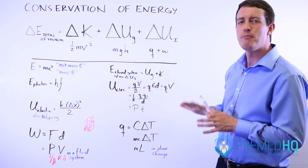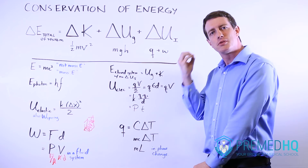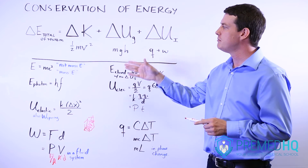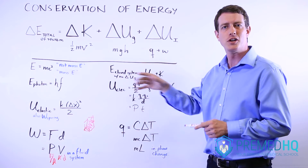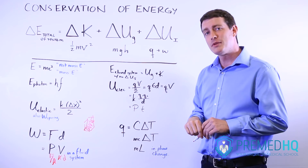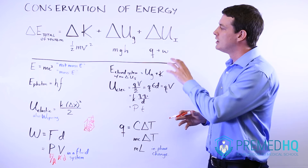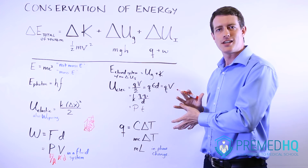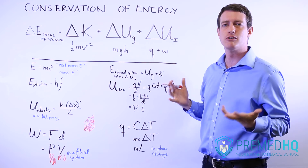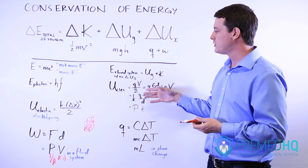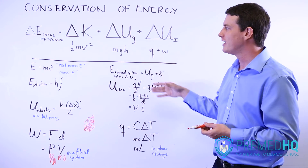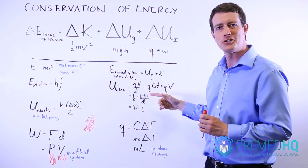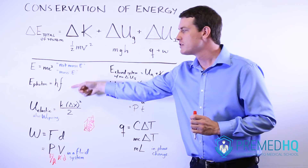That is the list of major energy formulas you'll be responsible for on the MCAT, and you can gain a lot of points by simply being able to recognize and convert these from one to another. One thing many students find helpful is to look at these and try to figure out examples of where you're converting one type of energy into a different type. For example, a remote control car might be something where you're using electrical potential energy and converting that into kinetic energy.